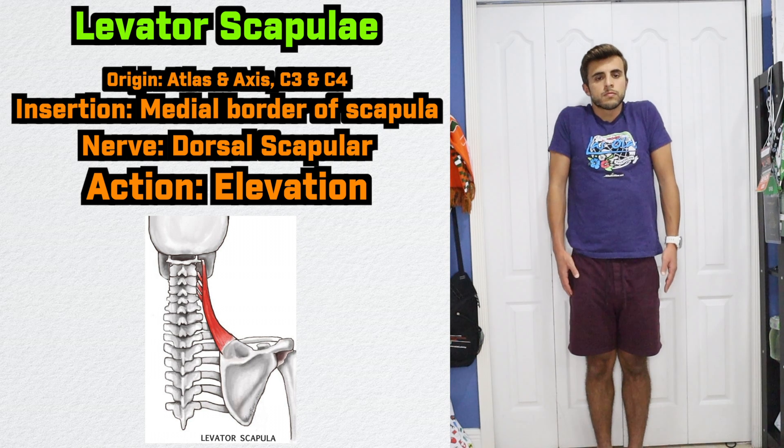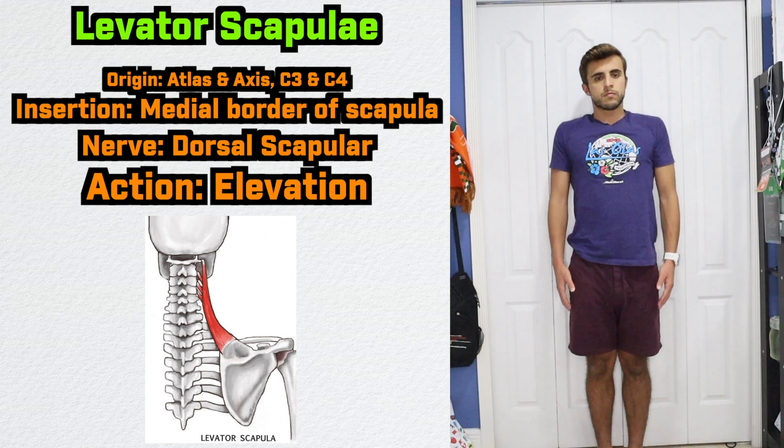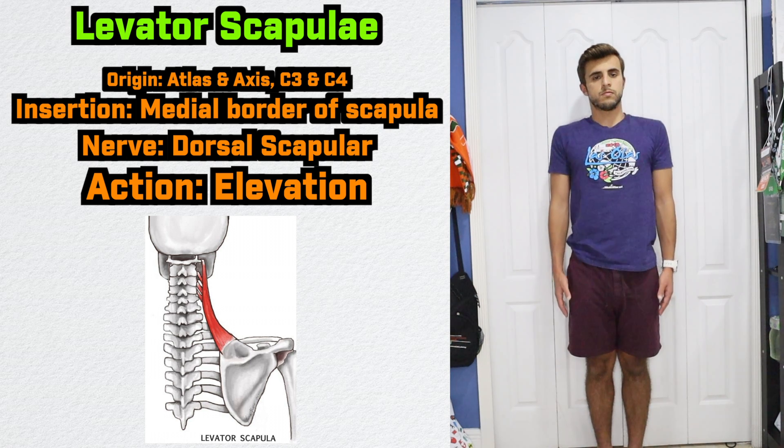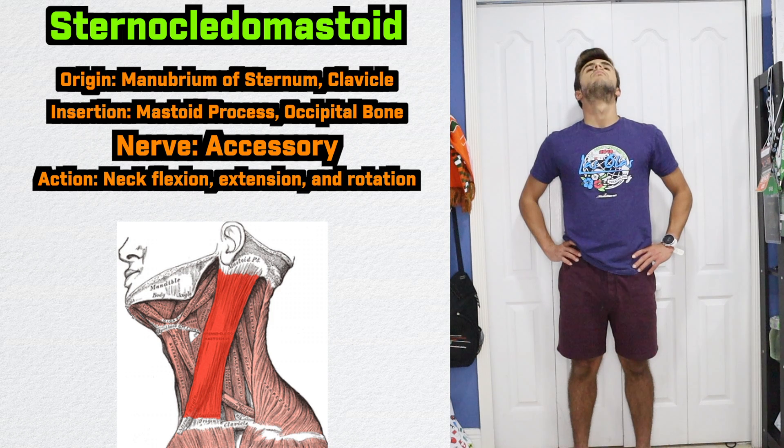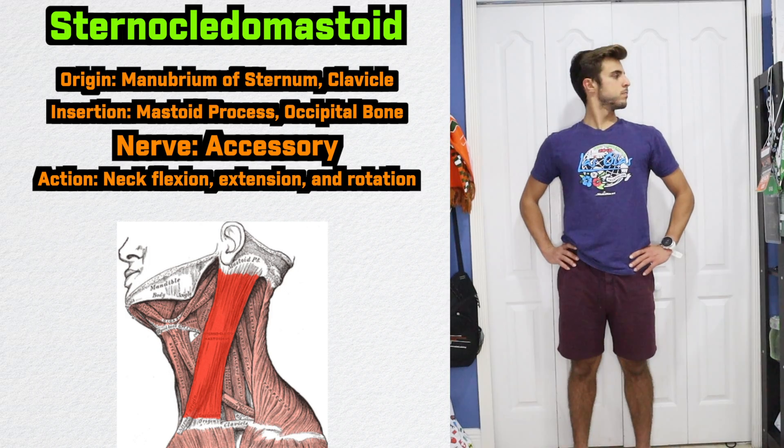Superiorly, we have the levator scapulae, which as the name suggests performs elevation of the scapula. Lastly, we have the sternocleidomastoid, which is responsible for neck flexion, extension, and rotation. Now that we know our bones and muscles, it's time to learn how all these different structures get injured. I like writing up all my notes on OneNote, so let's head over to the computer.